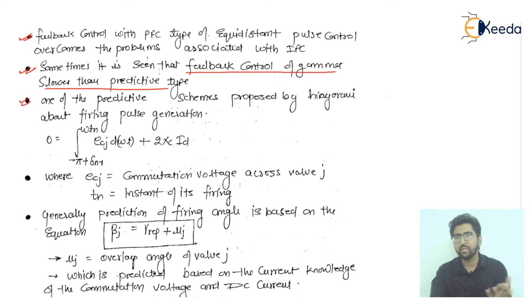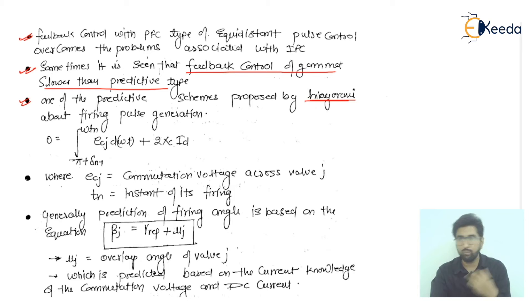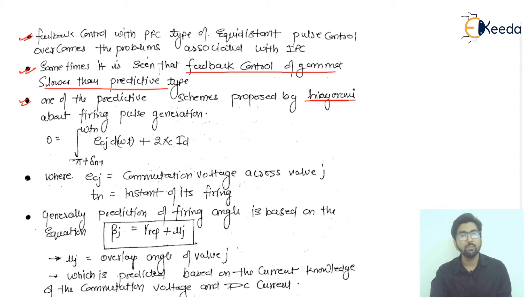There are many predictive schemes, and one of them was generally proposed by Hingarani, related to firing pulse generation. He gave the equation: the integration from minus pi plus delta of 2·ω·t·n·e_cj·d(ωt) plus 2·X_c·i_d, which is ultimately equal to zero.